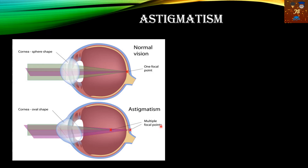The normal eye has a sphere-shaped cornea, which helps to build one focal point on the retina. But in the case of astigmatism, the shape of the cornea changes from a sphere to an oval. When light falls, it is distorted and creates multiple focal points. To understand astigmatism better, we need to see it from another angle.